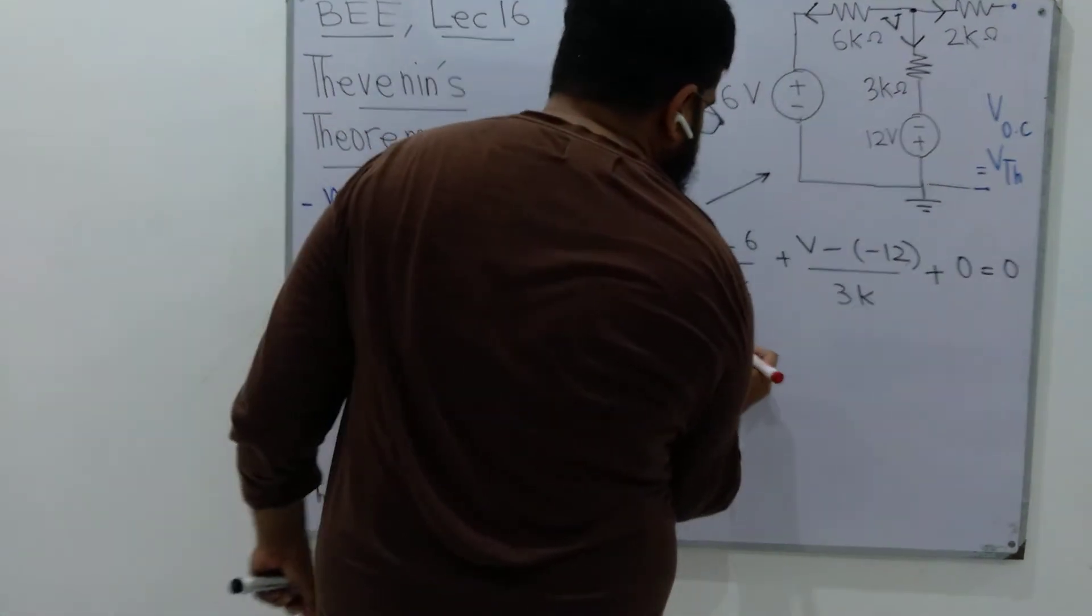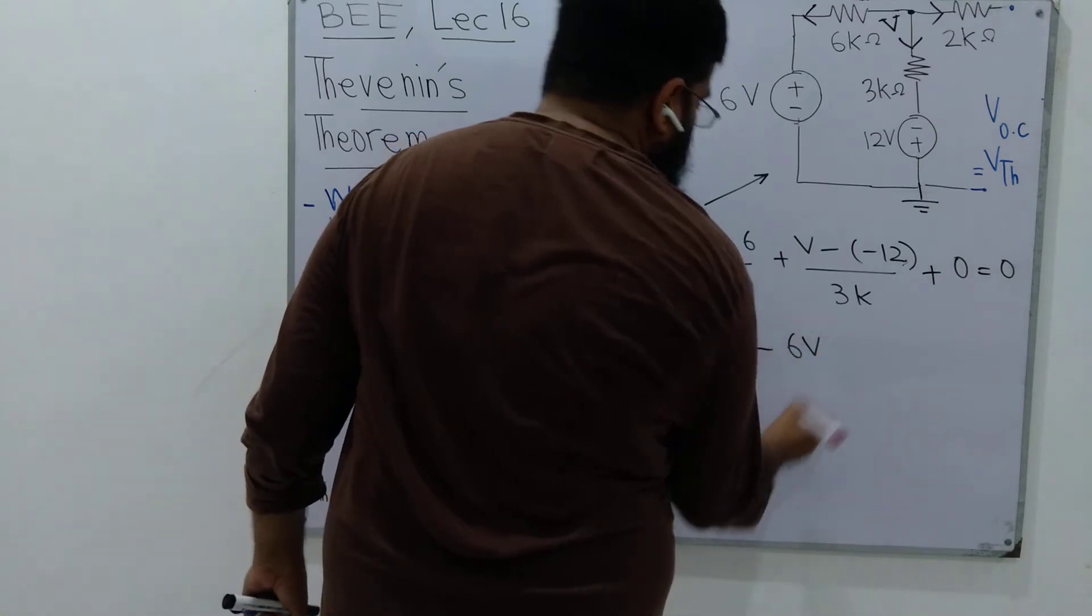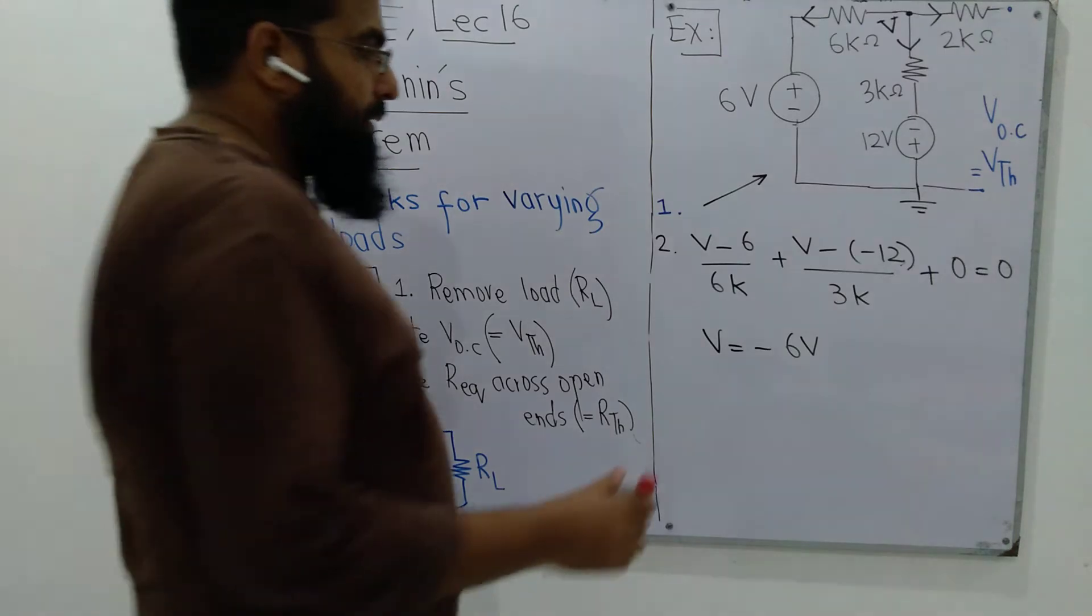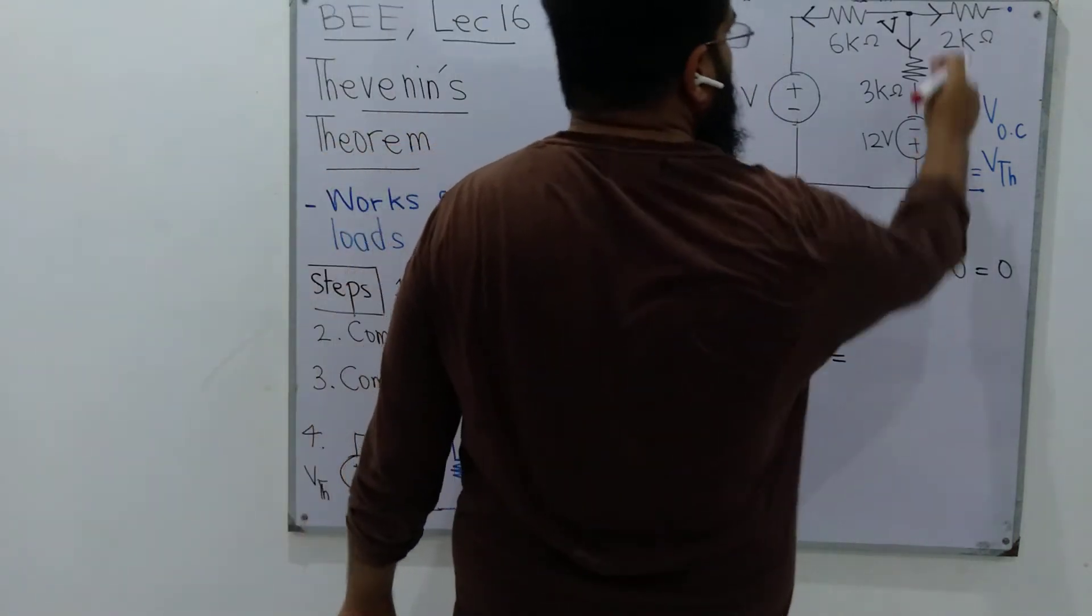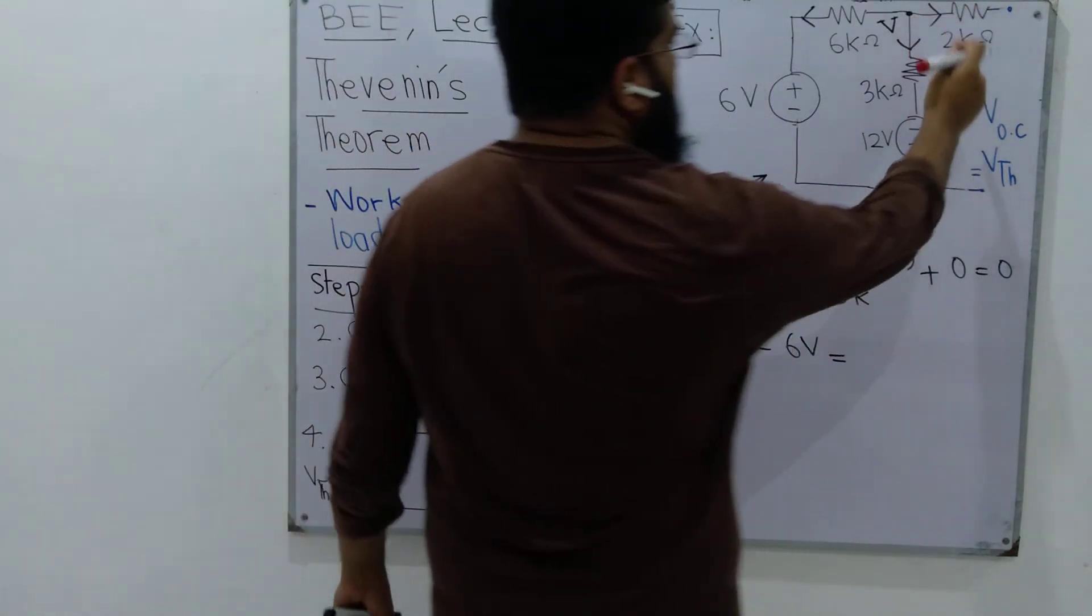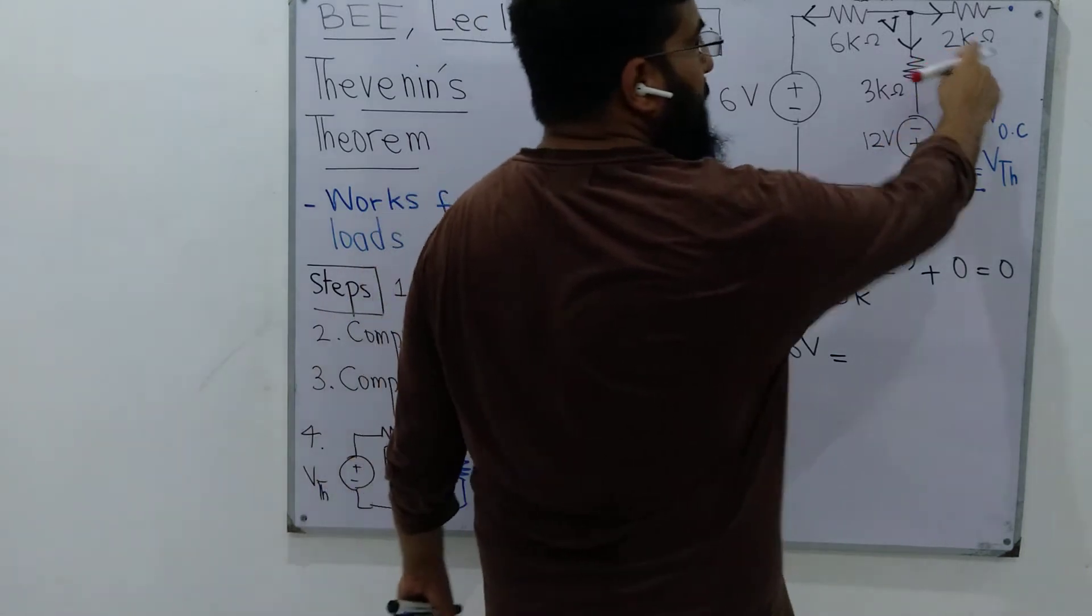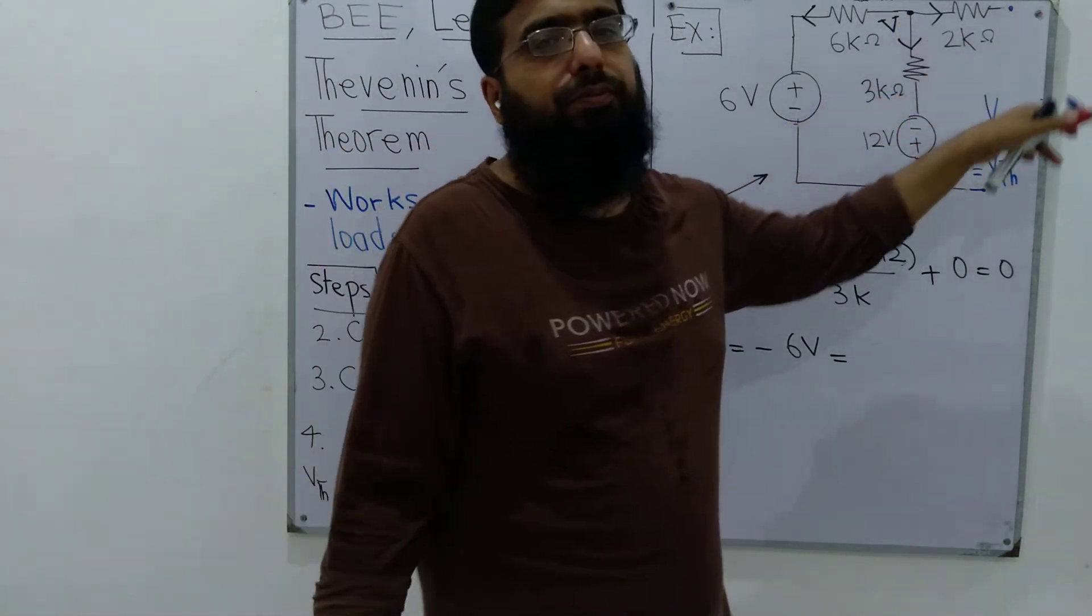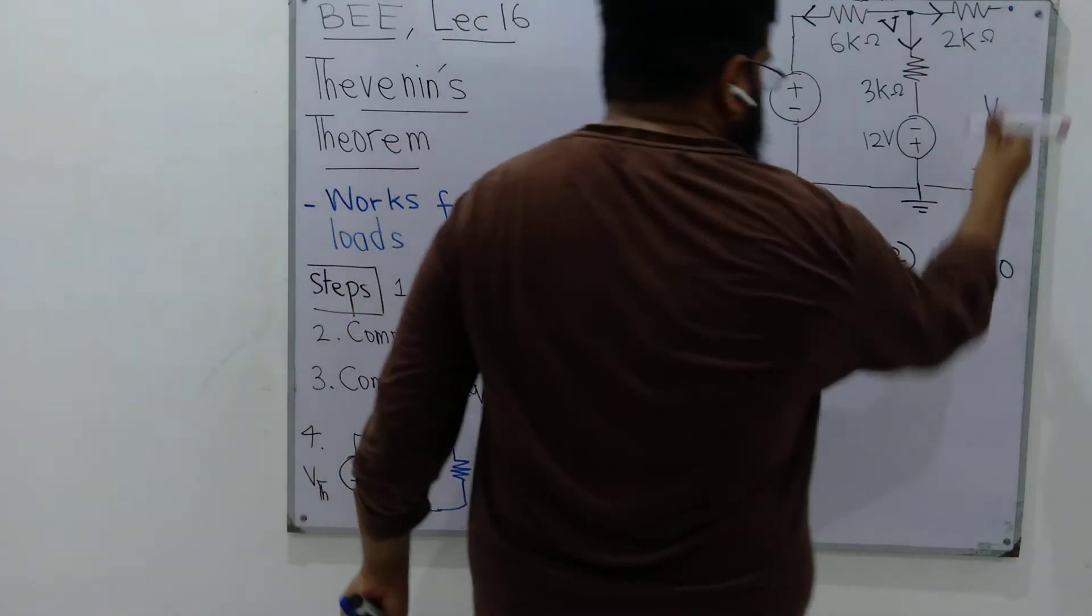Plus the current in this third branch. Since it's open circuit at the output there is no current, so it equals 0A. Now we have only one equation and one variable. We solve for it and V comes out to be minus 6 volts. Since there is no current in this branch, no voltage drop across this 2k, V is the same as VOC.